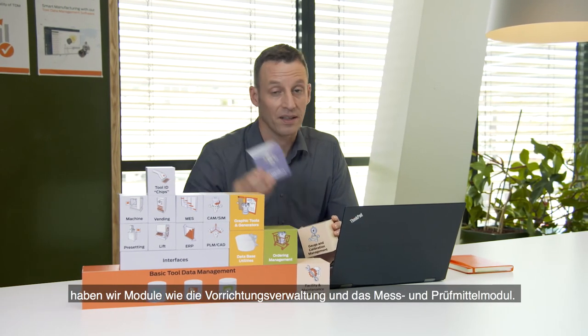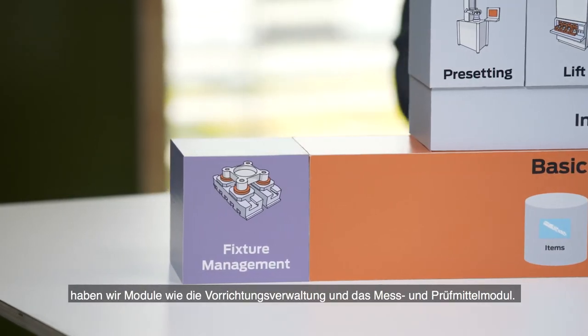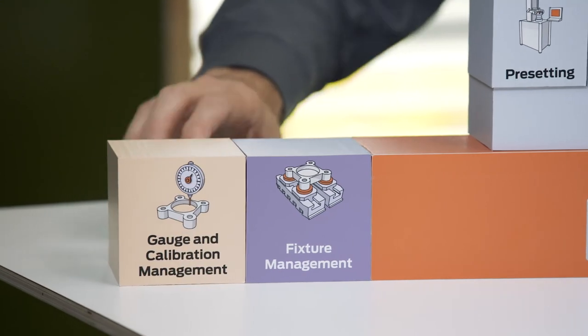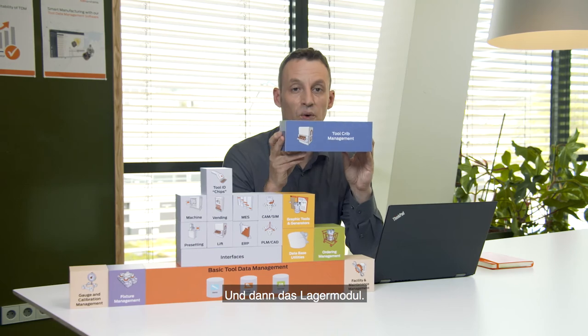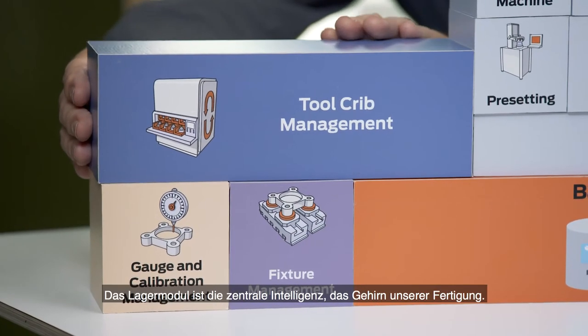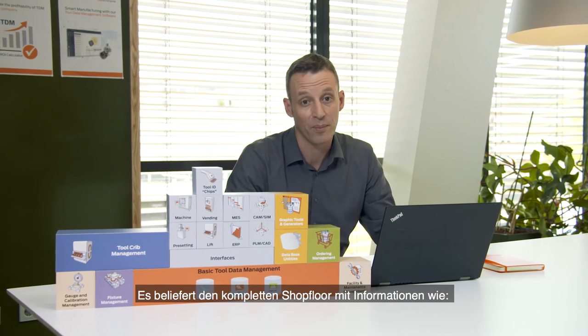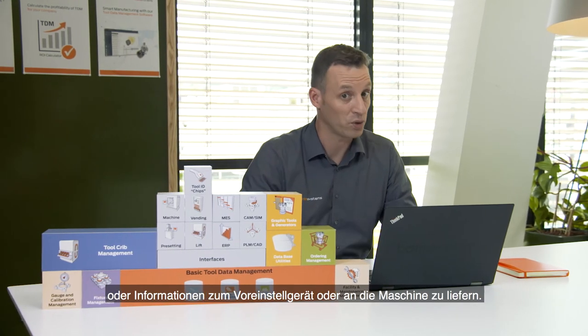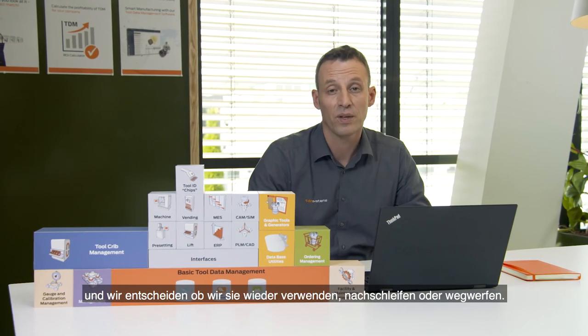It gets serious now — we're leaving the planning stages and heading onto the shop floor. This is where the money is actually made; now we rake in the benefits from proper planning and tool data management. To make sure we have everything when we need it, we have support modules like the fixture module and gauge and calibration module. And then, of course, tool crib management. The tool crib module is the central intelligence — the brains of our manufacturing. It supplies the entire shop floor with information, allocating components for tool assembly, providing information to presetters and machines. When a job is done, tools come back and we decide whether to reuse, regrind, or discard them.